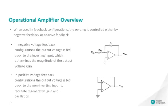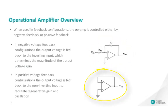Two typical op-amp configurations are negative feedback and positive feedback. In negative feedback configurations, the output voltage is fed back to the inverting input, which, along with the feedback network components, determines the magnitude of the output voltage gain. In positive feedback configurations, the output voltage is fed back to the non-inverting input to facilitate regenerative gain and oscillation.